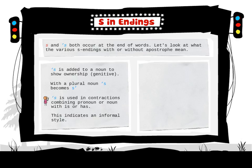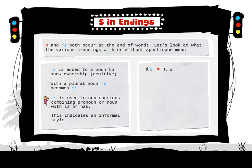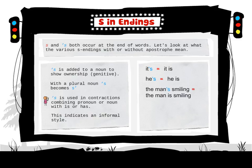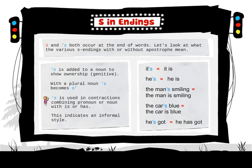Apostrophe S is also used in contractions, combining a pronoun or noun with 'is' or 'has'. This indicates an informal style. Examples: it's equals it is; he's equals he is; the man's smiling equals the man is smiling; the car's blue equals the car is blue; he's got equals he has got.